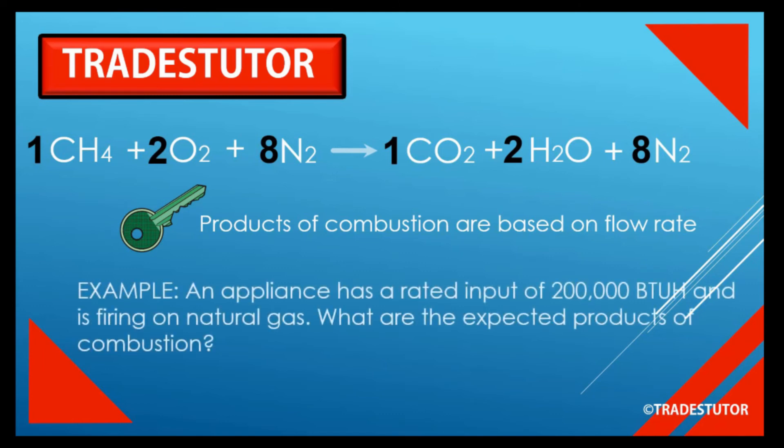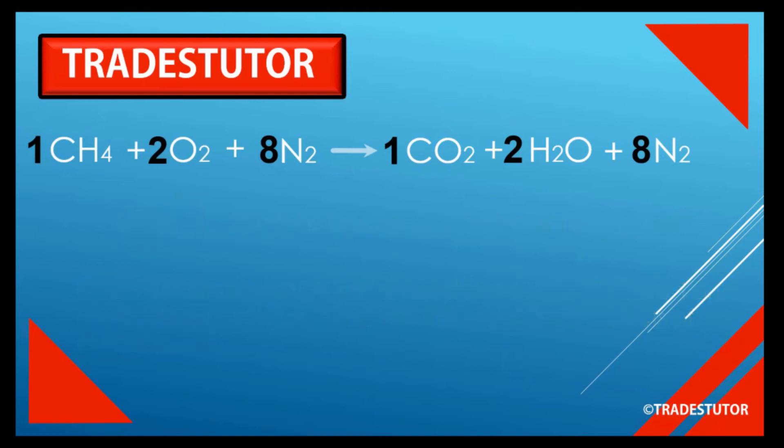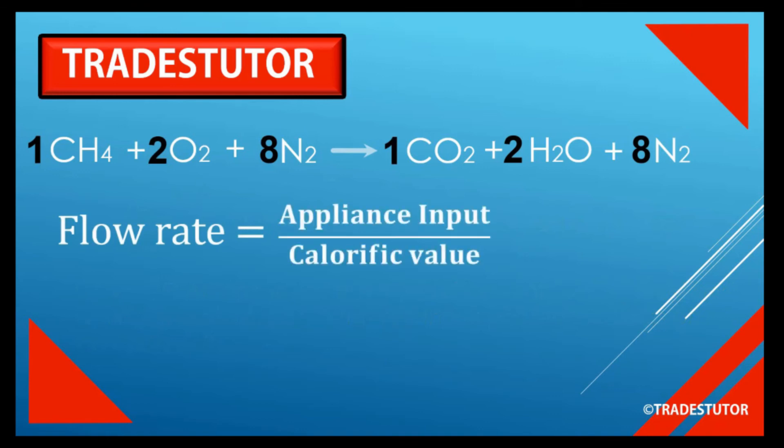An appliance has a rated input of 200,000 BTUs per hour and is firing on natural gas. What are the expected products of combustion? According to that key, the first thing we've got to do is find a flow rate. The formula is: flow rate equals appliance input divided by the calorific value of the gas being used.